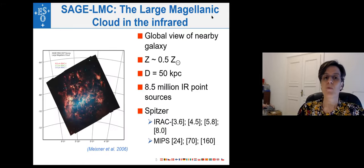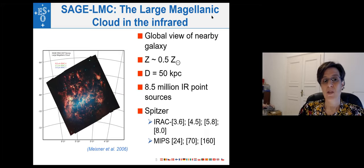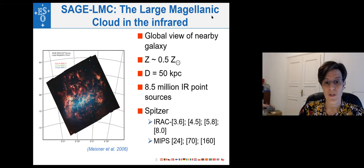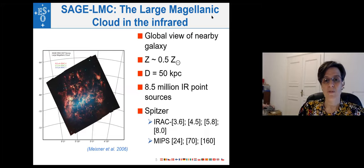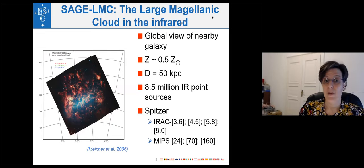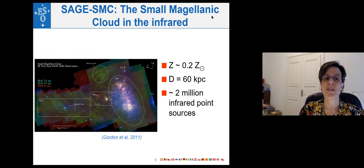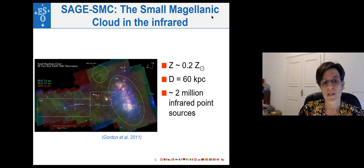Looking at the first question — galactic dust production rate by AGB stars — a lot of this work has been done using the SAGE LMC and SMC surveys. The LMC survey is a seven-by-seven degree map of the Large Magellanic Cloud using Spitzer in all seven bands available, and later also with Herschel at longer wavelengths. We identified eight and a half million input point sources — those are sources with an IRAC 3.6 micron detection — and as you go to progressively longer wavelengths you see fewer sources, but we have a catalog with eight and a half million point sources.